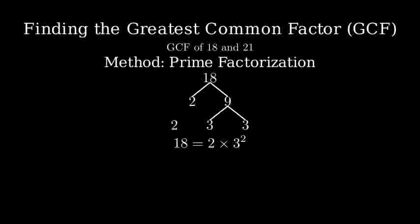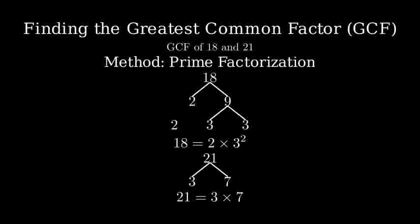Now let's factor 21. 21 divided by 3 equals 7. So 21 equals 3 times 7.